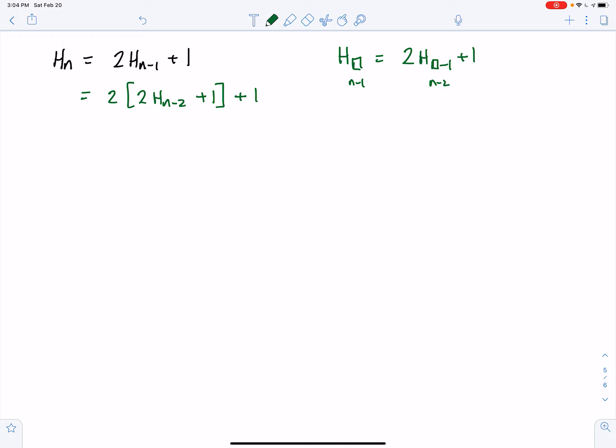So there's what we have. Now we're going to simplify, and that gives us 2² h_{n-2} plus 2 plus 1.